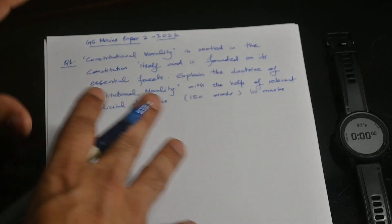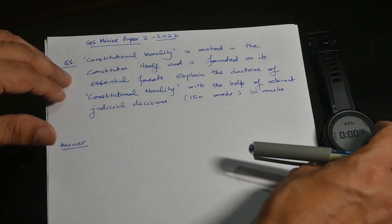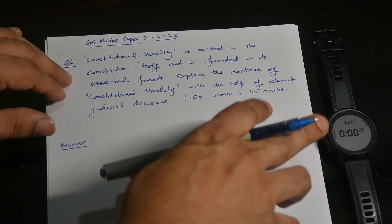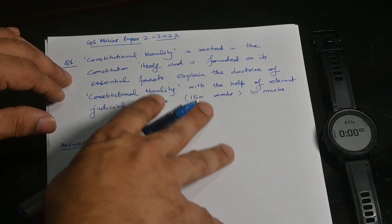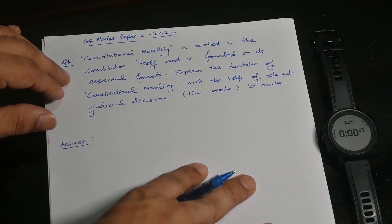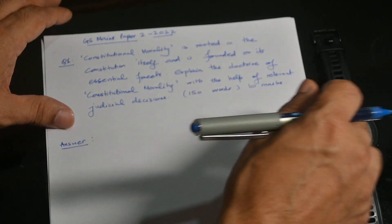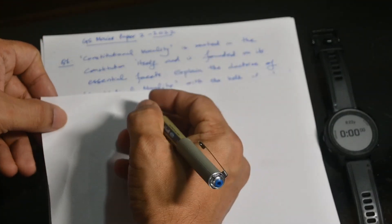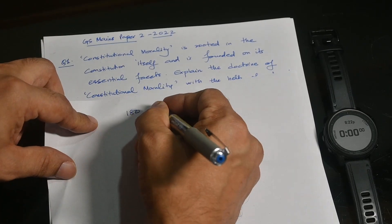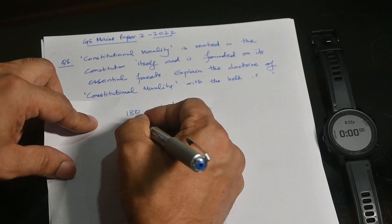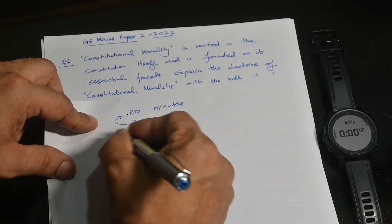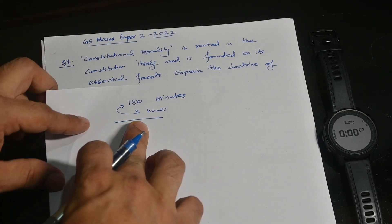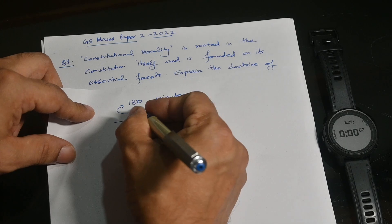First of all, let us get done with the basics. Any watch you can use with a timer because it is very important for you to be able to time your entire paper. See, normally in a UPSC paper, what you will get is a total of 180 minutes. There are three hours. So three hours is 180 minutes. So you will get 180 minutes to complete your paper.